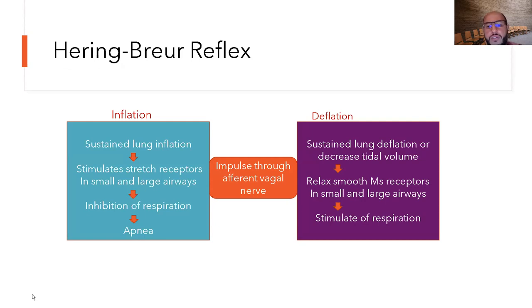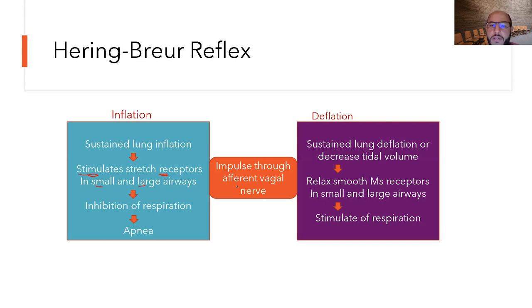During inspiration shortly after birth, when the baby breathes and the lung inflates with a good tidal volume, smooth muscle receptors in the small and large airway get stimulated. They send impulses through the vagus nerve to the respiratory center, which triggers inhibition of respiration — the baby slows breathing and in very rare cases may even stop breathing.